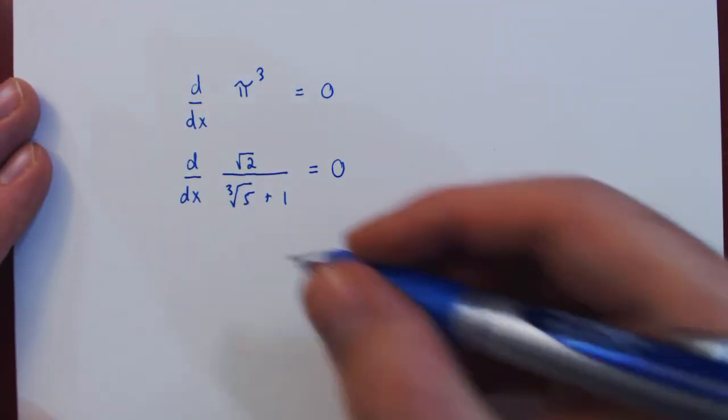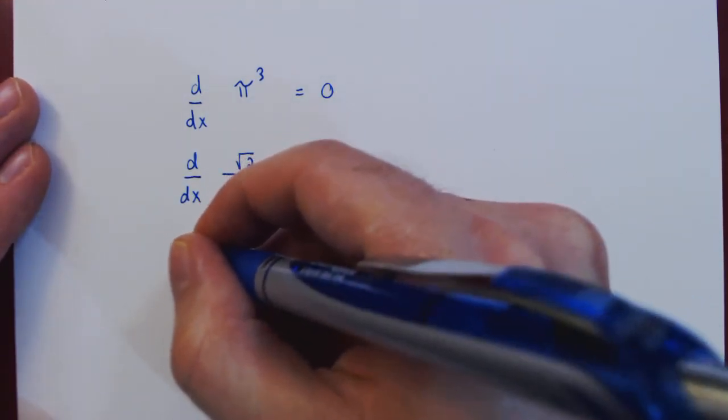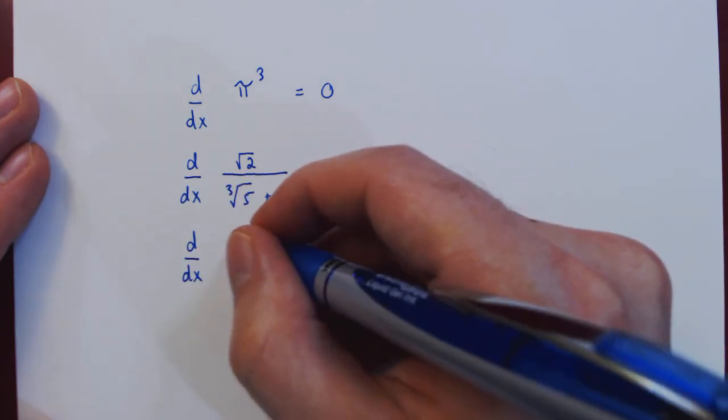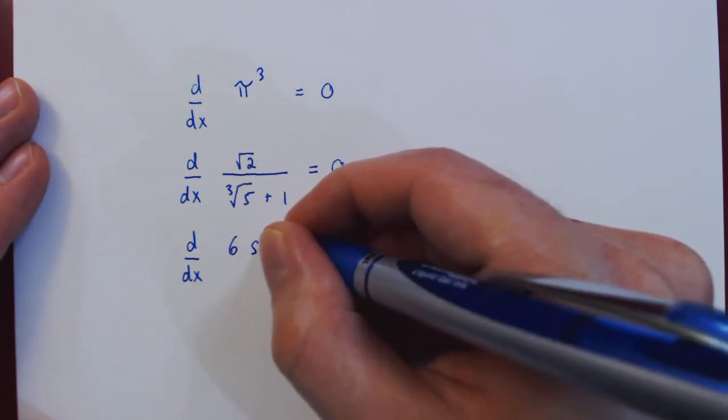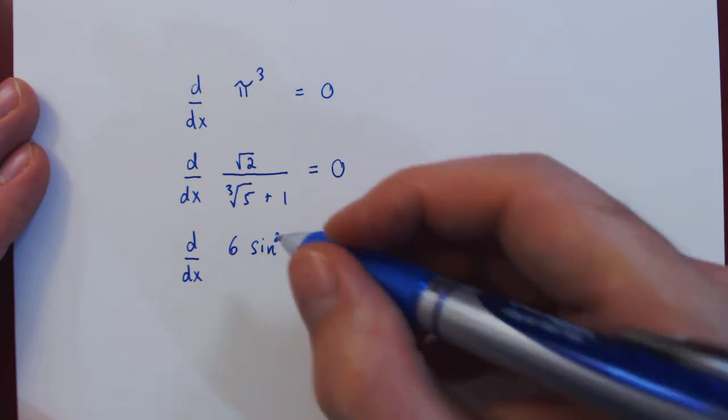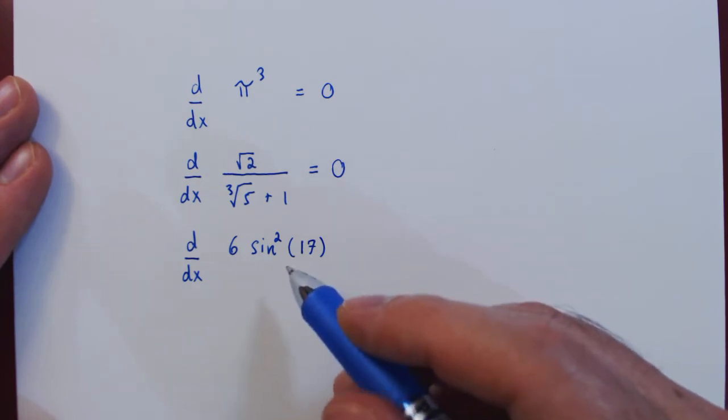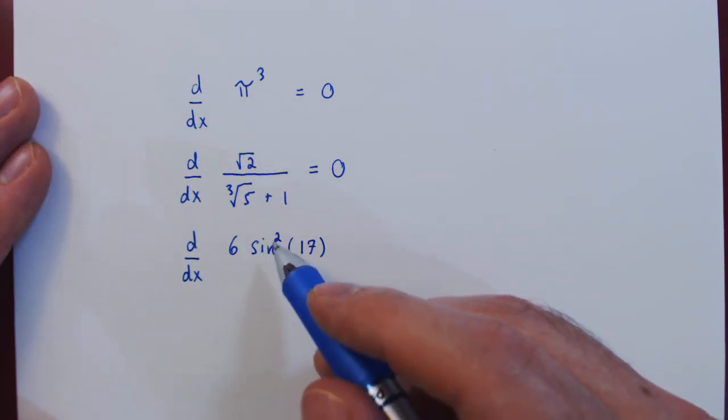Let's do one more example. If we take the derivative with respect to x again of the function 6 times sine squared of 17.